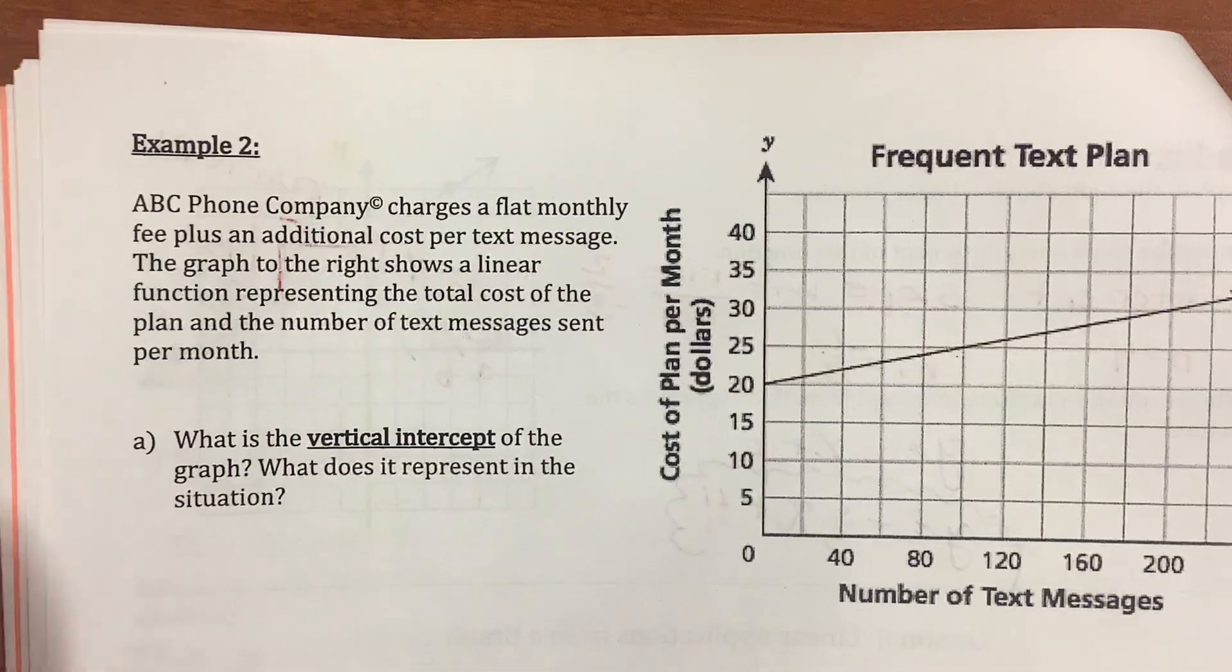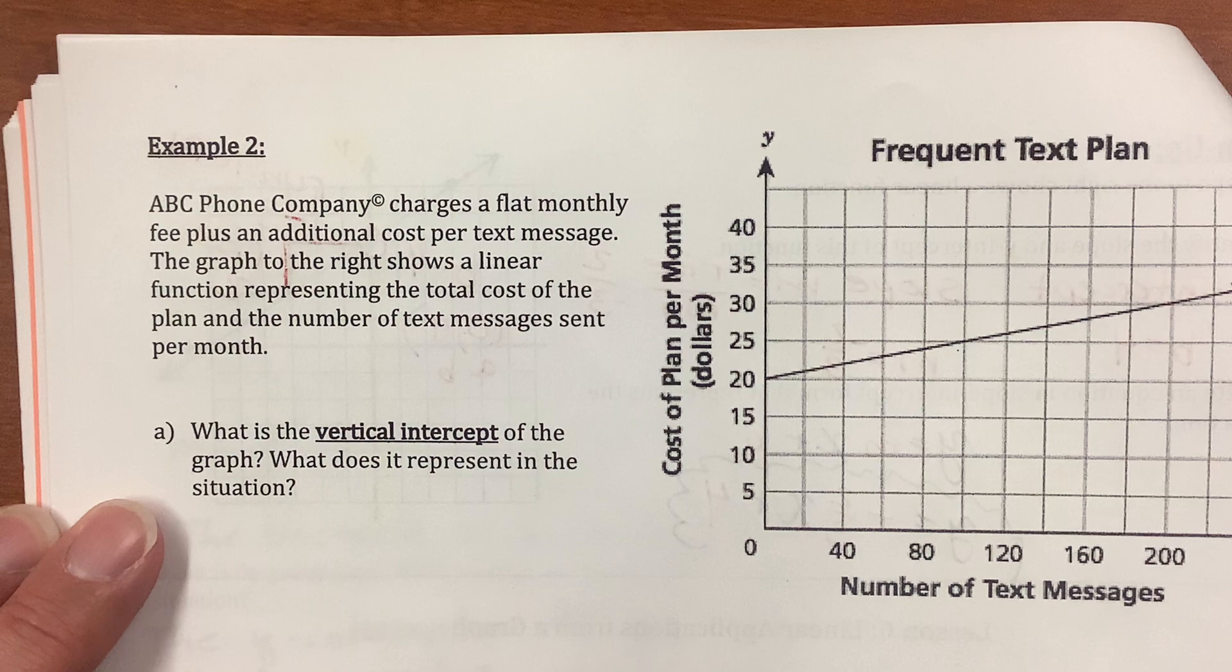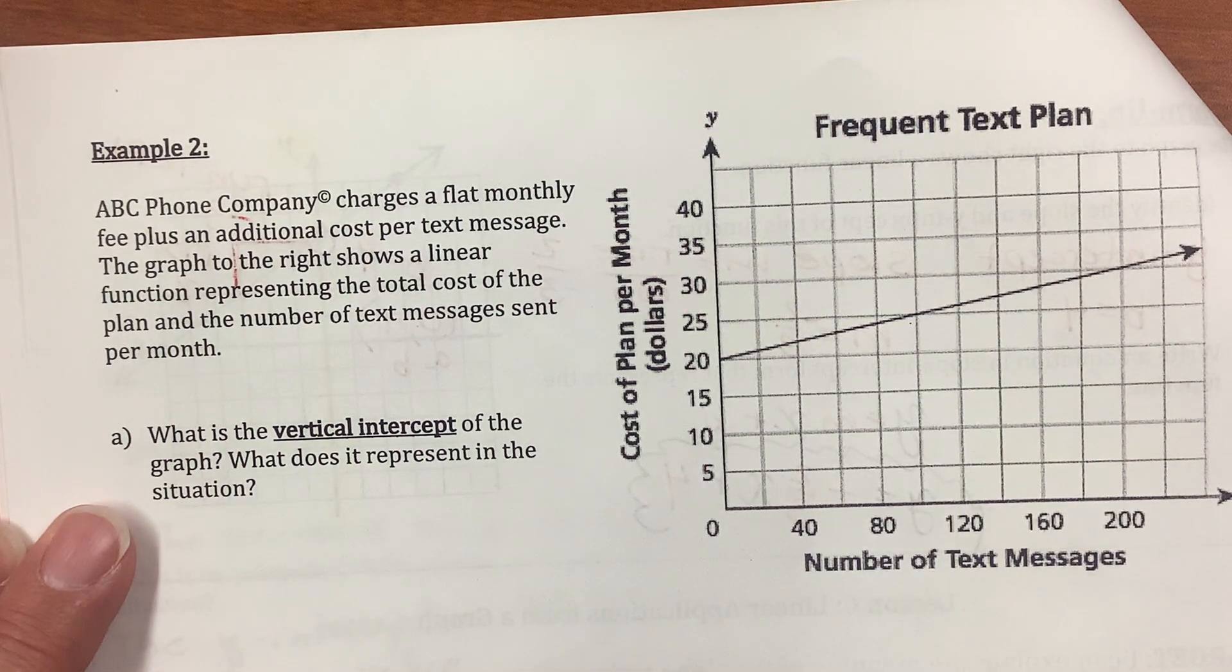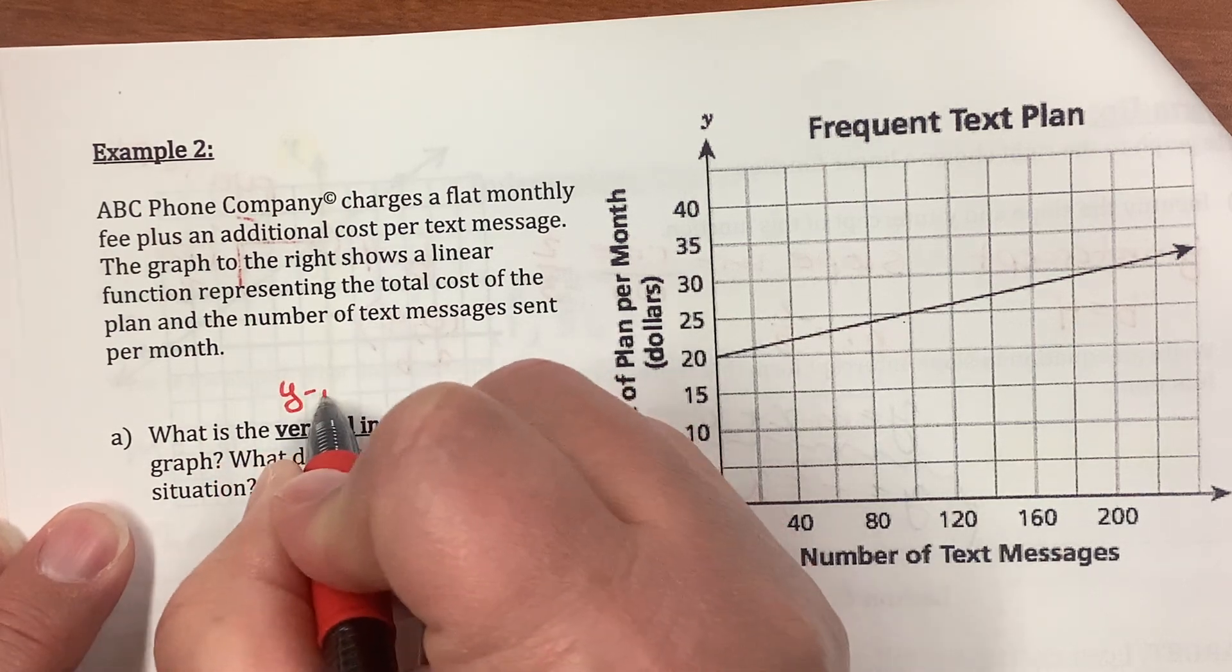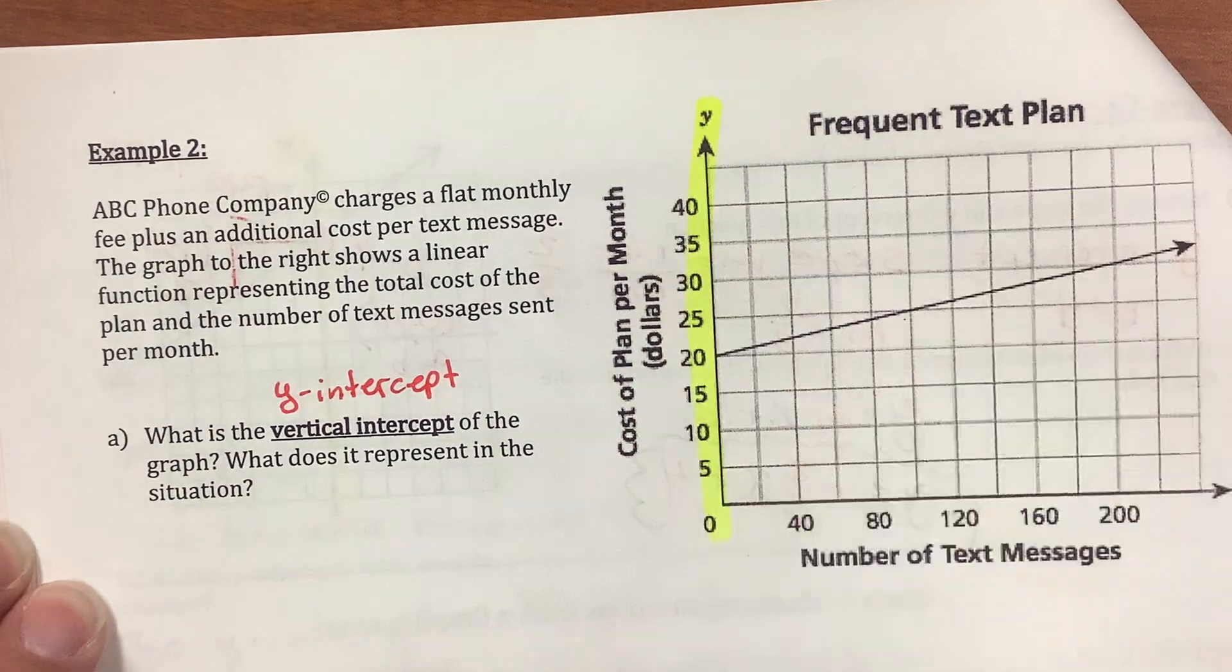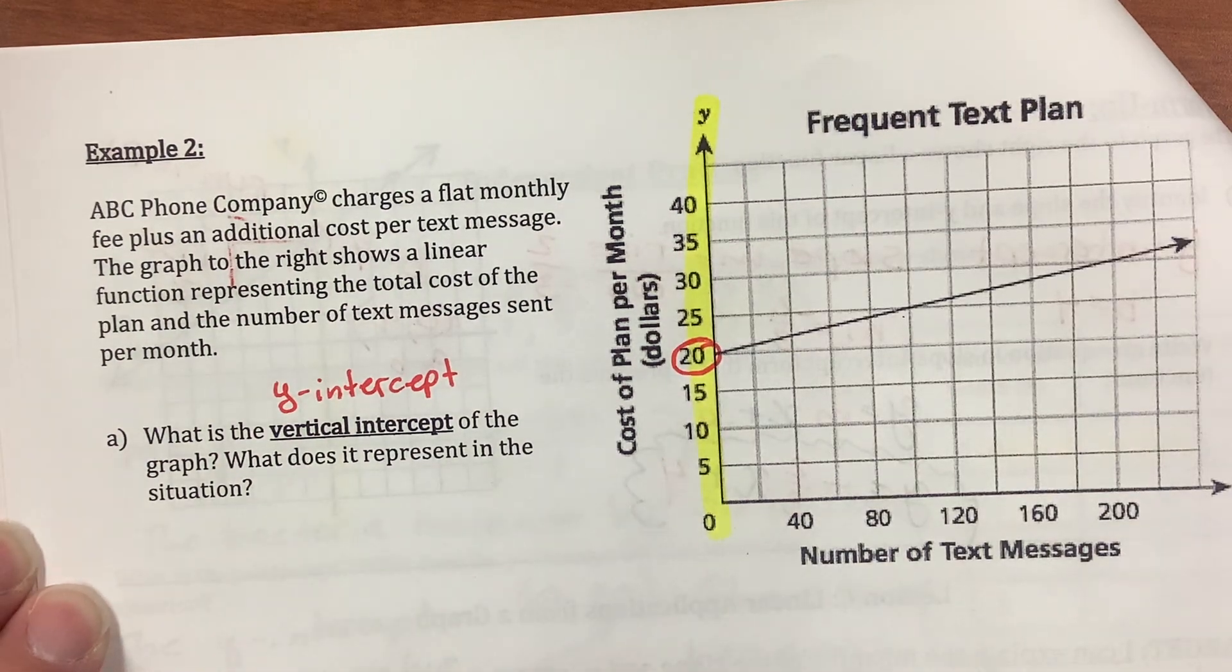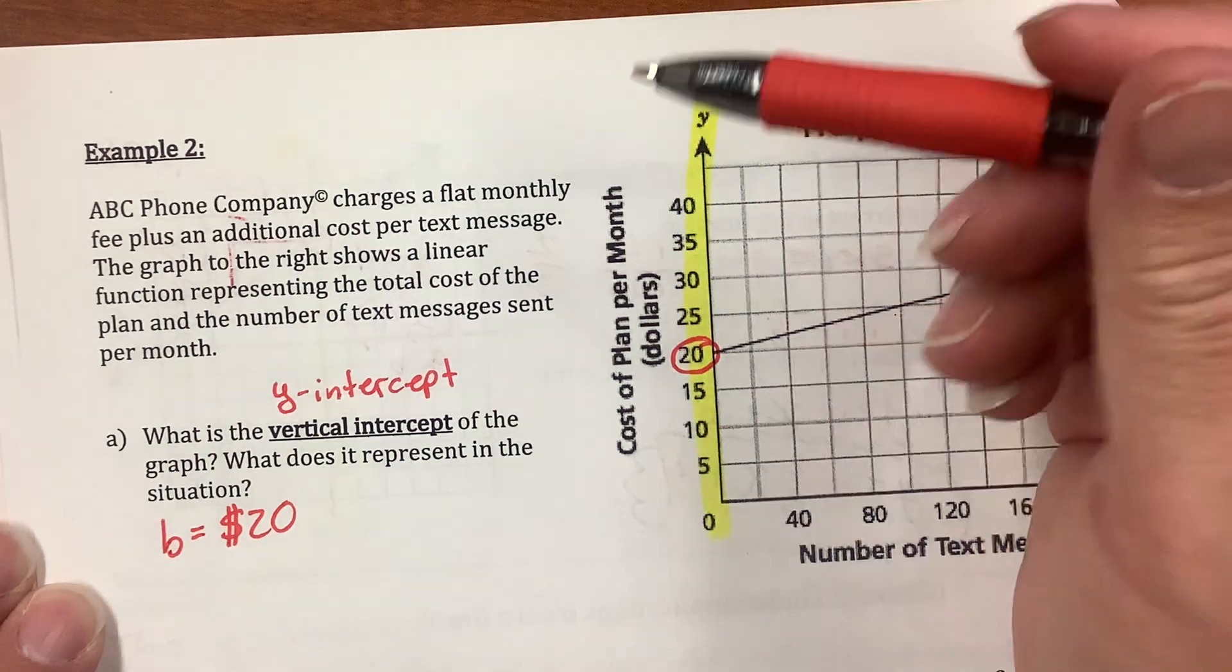Let's try the next one. Example 2. ABC phone company charges a flat monthly fee plus an additional cost per text. The graph to the right shows a linear function representing the total cost of the plan and the number of text messages sent per month. What does the vertical intercept of this graph mean? And what does it represent?